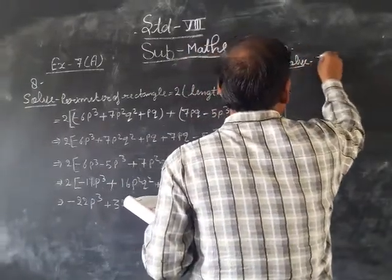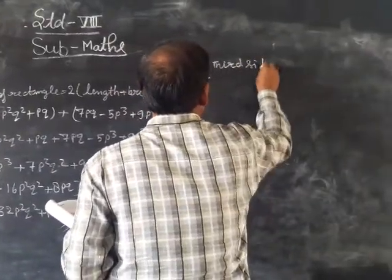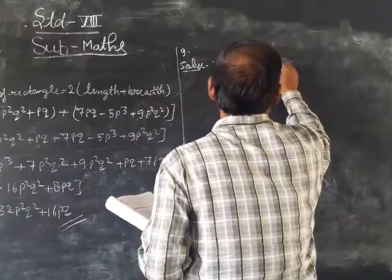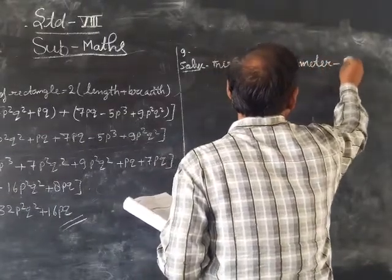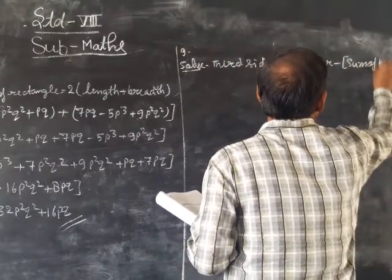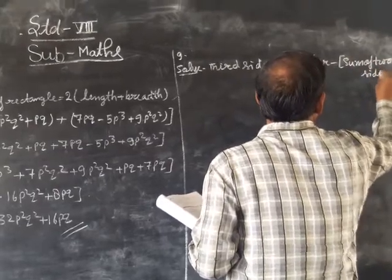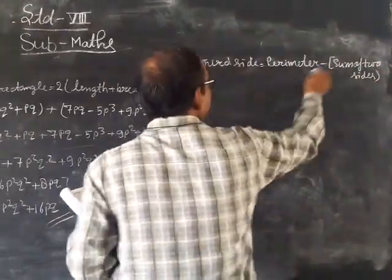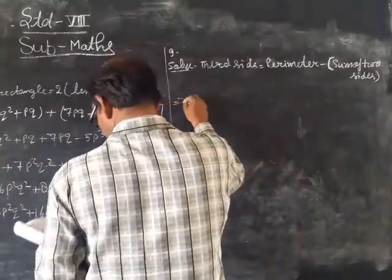Third side equals perimeter minus sum of two sides. Two sides are given, so we calculate perimeter minus the two sides.